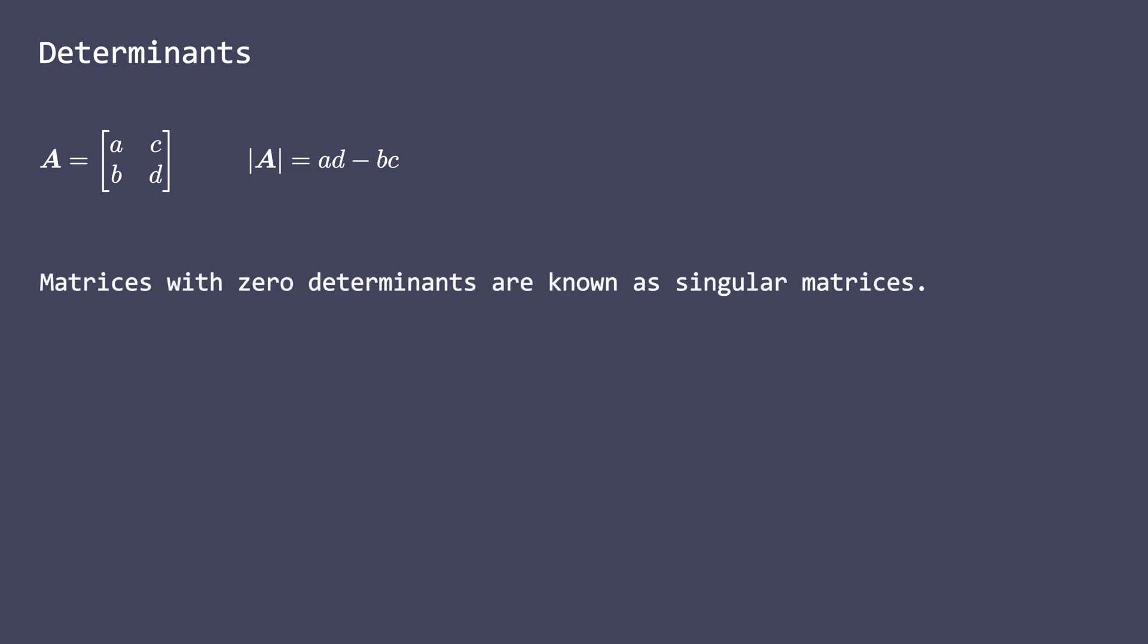Matrices with zero determinants are also called singular matrices. Also the inverse of a matrix can be given by this formula. And this makes it very easy to see why the matrix is non-invertible when the determinant is zero.